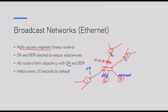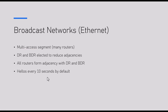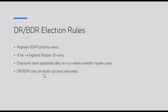This kind of network is called a broadcast network. A broadcast network has specific characteristics: hello messages are sent every 10 seconds and the dead timer is 40 seconds. Hello every 10 seconds, dead timer 40 seconds — that is very important to understand.